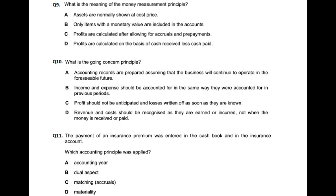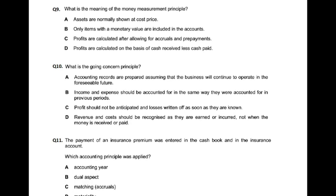What is the meaning of the money measurement principle? It means that accounts should only include things that have a monetary value. Assets are normally shown at cost price — this is the concept of historical cost. Only items with a monetary value are recorded; this is the concept of money measurement.